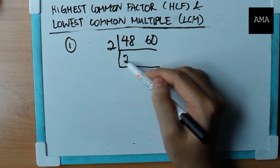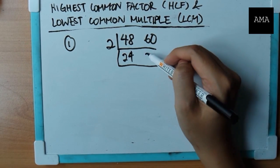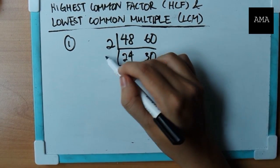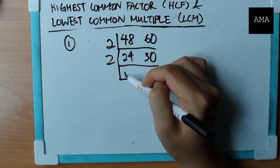As long as they're even, they can be divided by two. So they're both still even numbers, divide by two again. Twelve, fifteen.